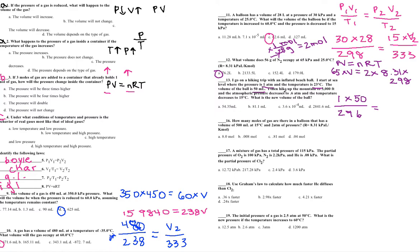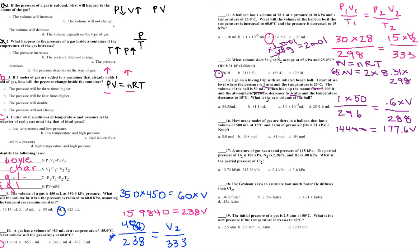Using the combined gas law: P1 = 1 atm, V1 = 50 mL, T1 = 296 K. New pressure = 0.6 atm, new volume = V2, new temperature = 15 + 273 = 288 K. So 288 × 50 × 1 = 14,400 equals 296 × 0.6 × V2, which is 177.6 × V2. Dividing both sides by 177.6 gives approximately 81 mL — the new volume.